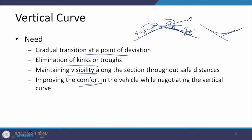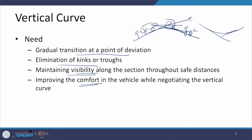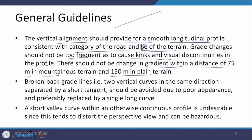These are the different needs for the provision of a vertical curve. Now, what are the general guidelines? The vertical alignment should provide for a smooth longitudinal profile consistent with the category of road and the type of terrain. The grade change should not be too frequent as to cause kinks and visual discontinuities in the profile, and there should not be a change in the gradient within a distance of 75 meters in mountainous terrain and 150 meters in plain terrain.